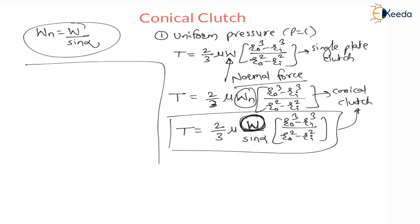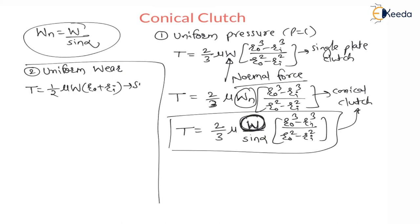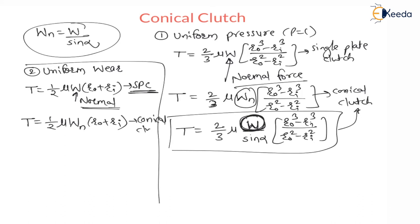This is as per uniform pressure theory. Now second, as per uniform wear theory, the torque transmitted is equal to (1/2) × μ × W × (Ro + Ri) — this is for single plate clutch where W is the normal force only. Therefore for conical clutch it is (1/2) × μ × WN × (Ro + Ri). Substituting WN = W / sin alpha, torque equals (1/2) × μ × W / sin alpha × (Ro + Ri).